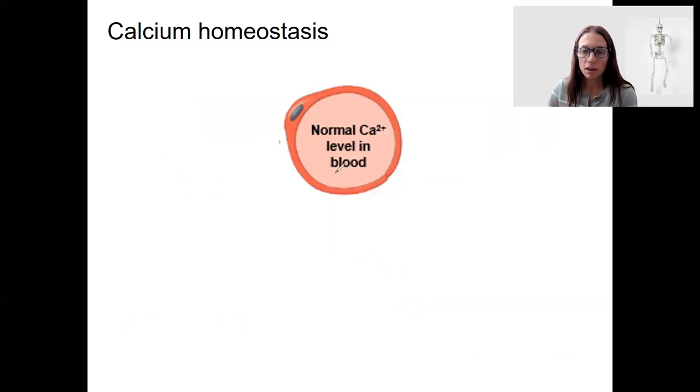Calcium levels in the blood, this is in the plasma portion, the water portion of the blood, need to be maintained within some normal range. And that is because calcium is so critical for many physiological processes.